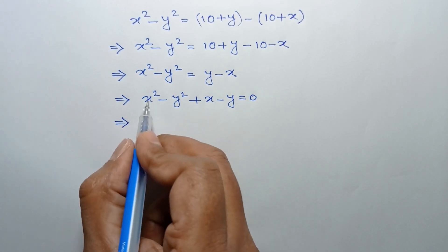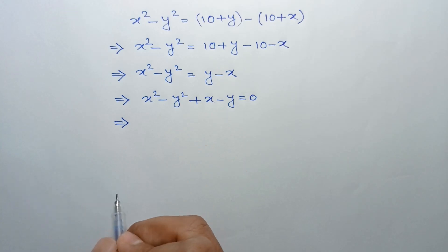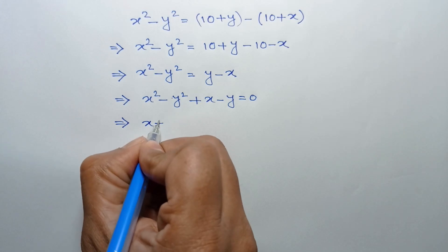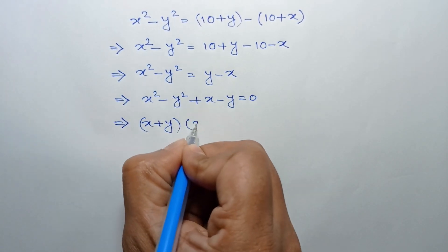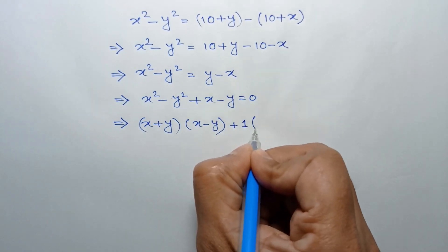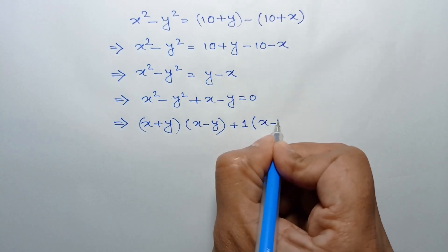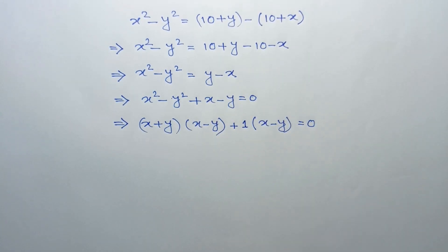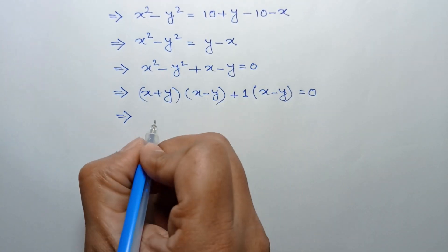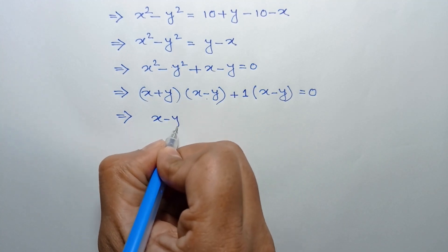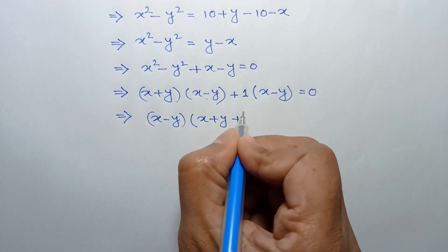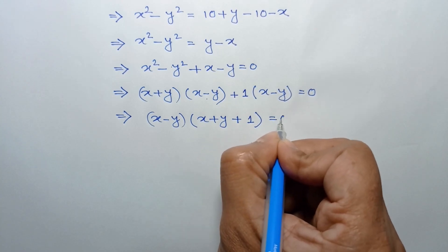Applying the formula a squared minus b squared equals a plus b times a minus b, we can write x plus y times x minus y, and taking out positive 1 as a common factor we get x minus y. So we have x minus y times x plus y plus 1 is equal to 0.